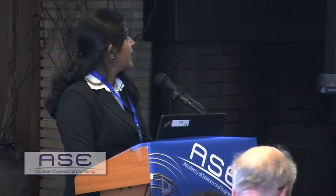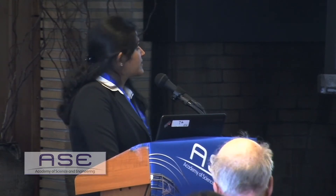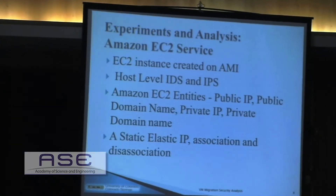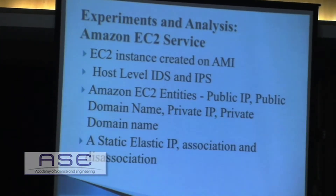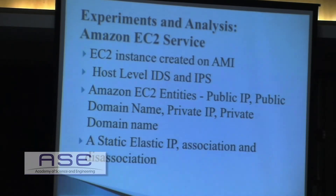Our experiment test bed is the Amazon EC2 service. We used EC2 Classic where we created two instances, Instance A and Instance B, using AMI image instances provided by Amazon. We installed two host-level security defenses: an IDS and an IPS. The intrusion detection system is Snort, and the IPS is the netfilter IP tables. When an instance is launched in a public EC2 cloud, EC2 assigns a public IP, public domain name, private IP, and private domain name.